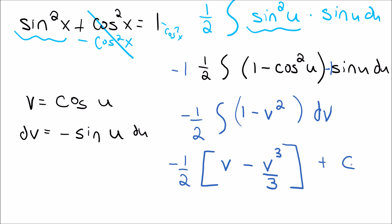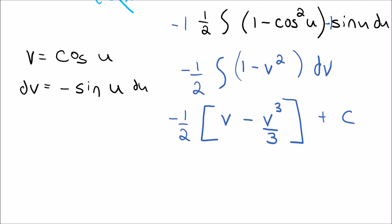So now we will always do now is go back and substitute in what we had. So we said v was cosine of u. So I'm going to go ahead and make this then negative 1 half times v, which is the cosine of u minus v cubed, in this case, which would be cosine cubed u over 3. And then I bring down the plus c. So now we're at this.